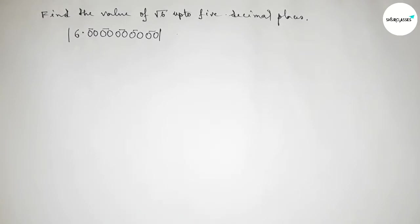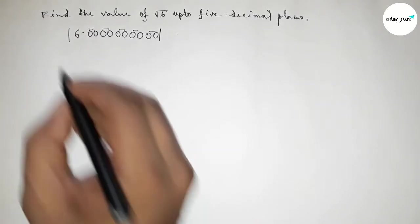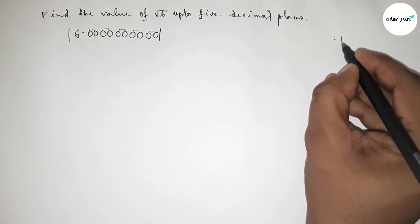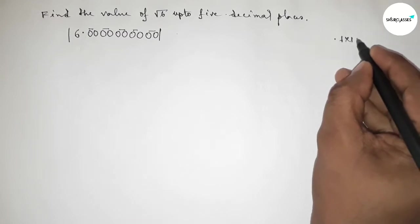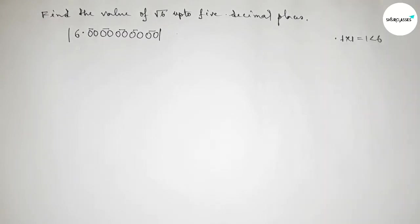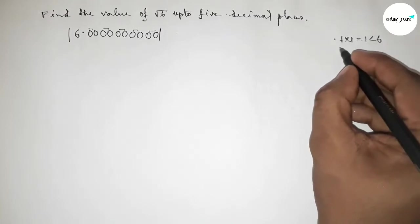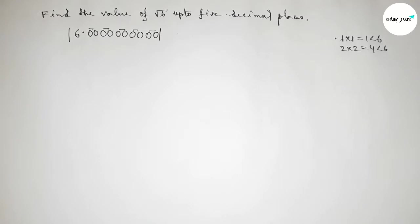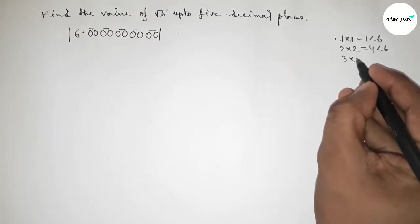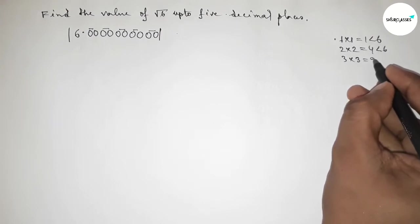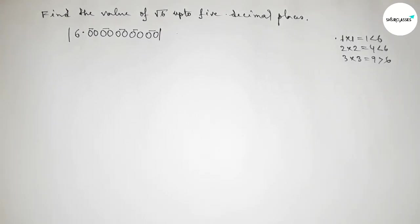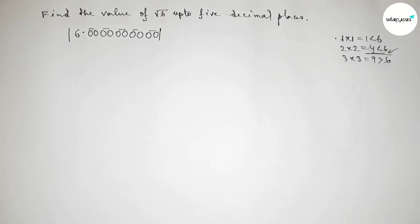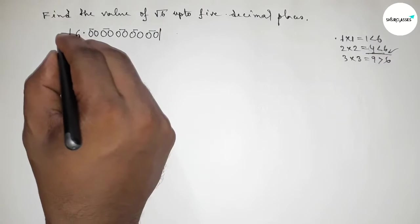Draw the division line on both sides. Next we have to take a number and multiply by itself, which gives a result less than 6. Taking 1: 1×1=1, less than 6. Taking 2: 2×2=4, less than 6. Taking 3: 3×3=9, which is greater than 6. So we take 2, since 4 is almost near and less than 6.